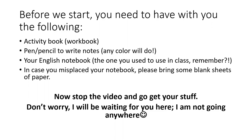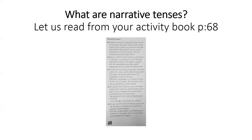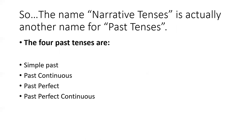So what are narrative tenses? Let us read from your activity book, page 68. Narrative tenses are verb tenses that we use to talk about the past. They are often used when we tell stories and when we describe past events. The three tenses used for narratives are the simple past, the past continuous, and the past perfect. The name 'narrative tenses' is actually another name for past tenses.